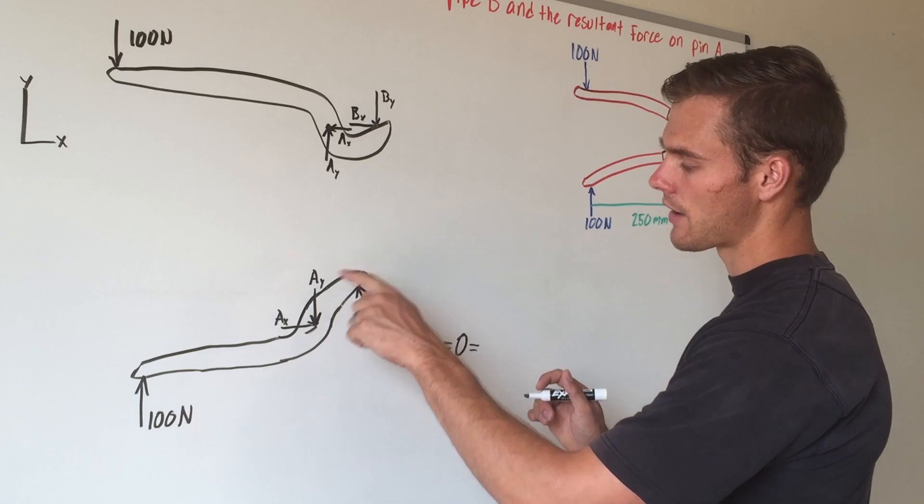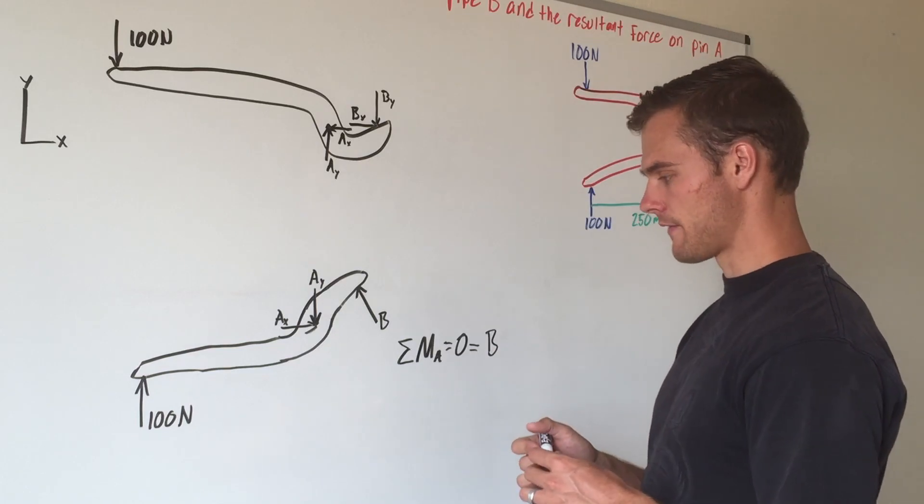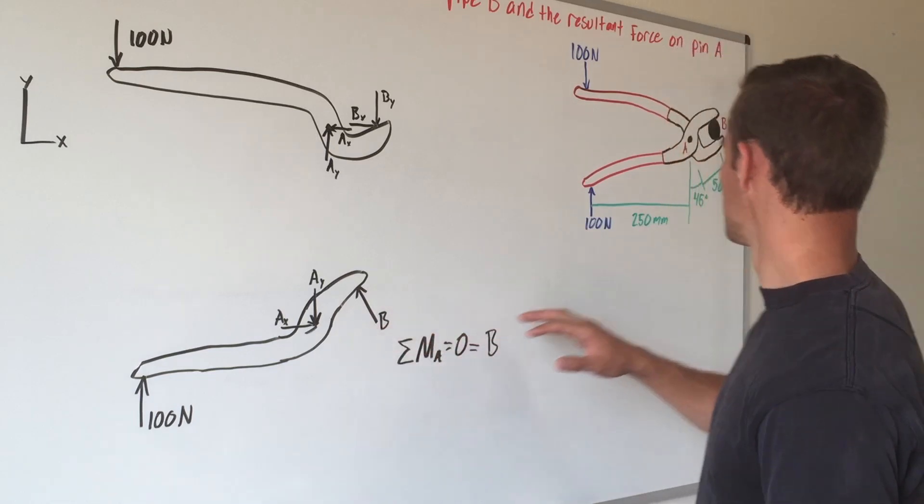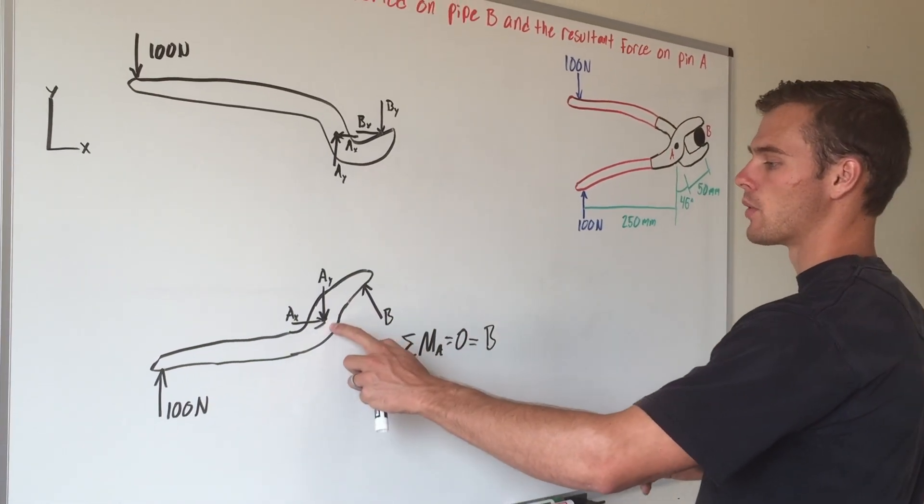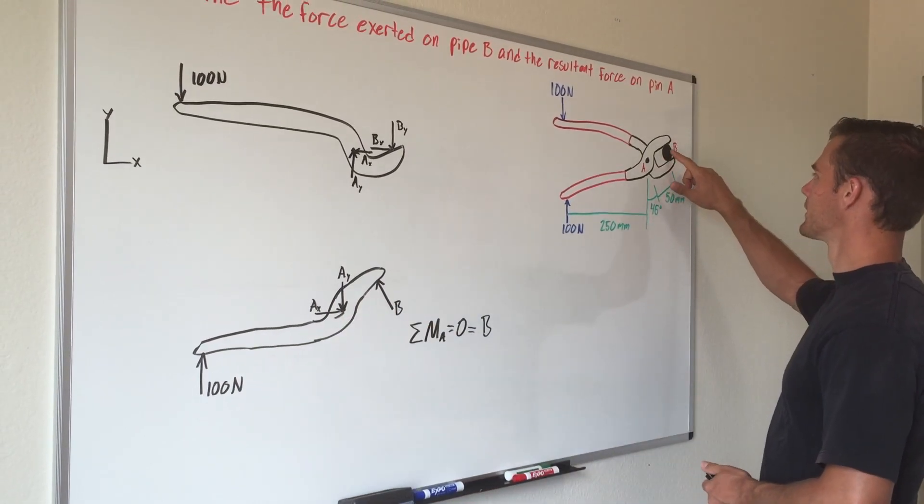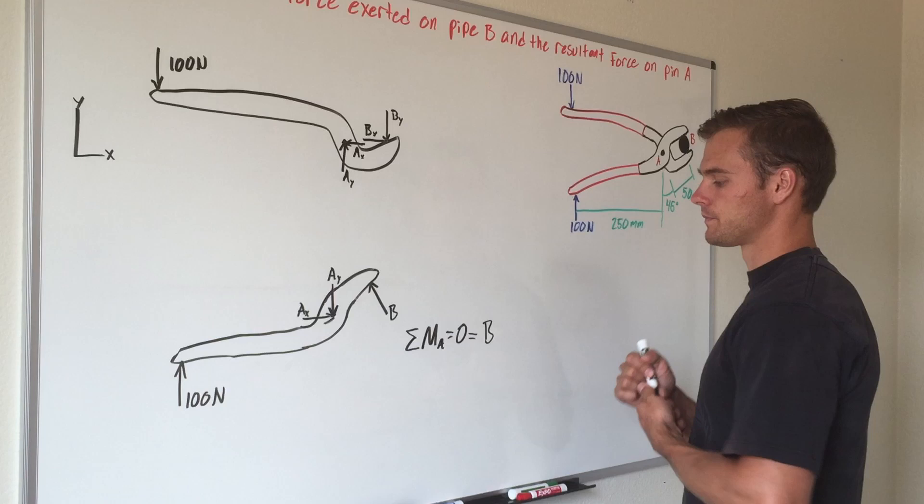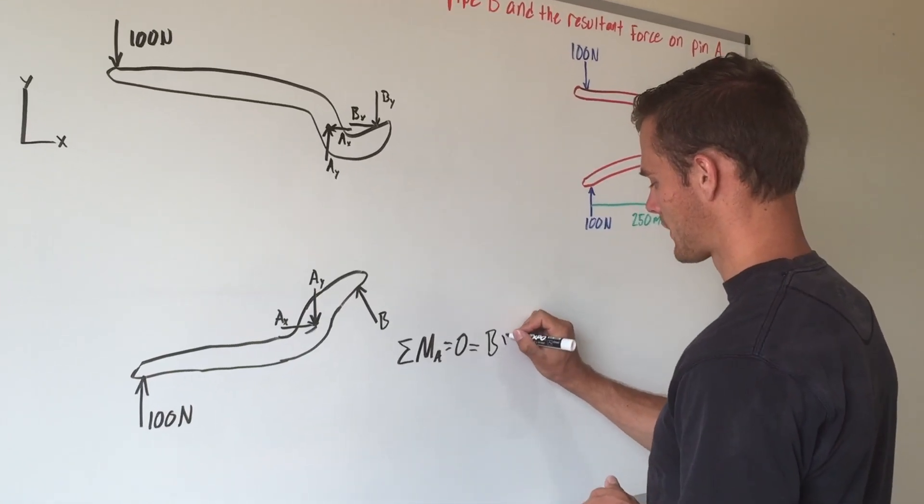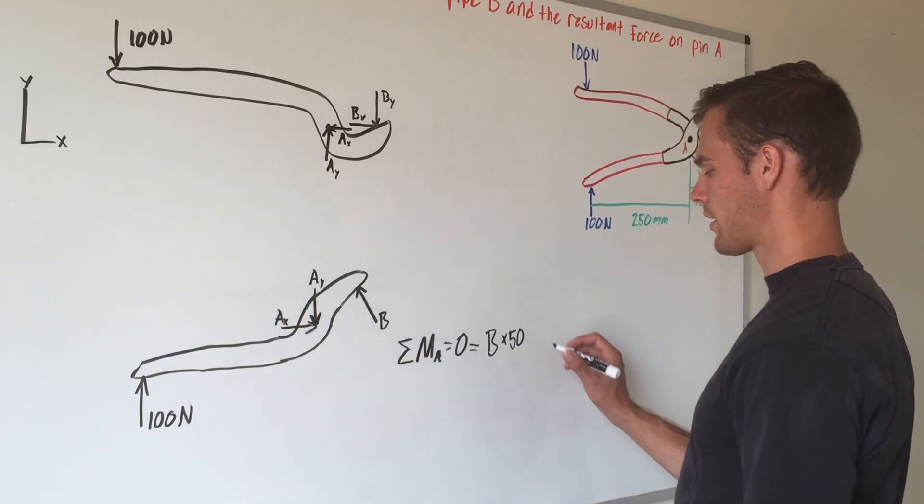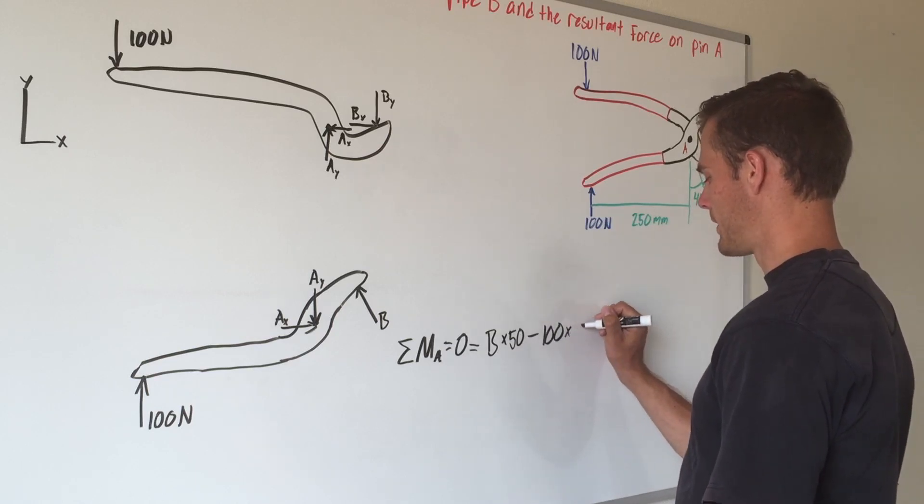Because the pliers are in equilibrium. And so you have point B, which is causing counterclockwise rotation, which we will say is positive. And the reason why we have left it not split up into its components is because the moment arm from point A to where pipe B touches the pliers is 50 millimeters. It already gives us that there. And so we have our 100 newton force. This is causing counterclockwise rotation, so we'll say that's negative, and it is 250 millimeters away.